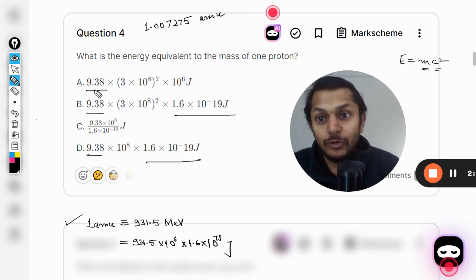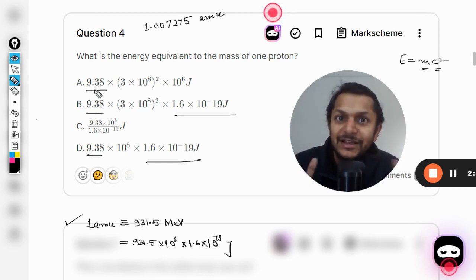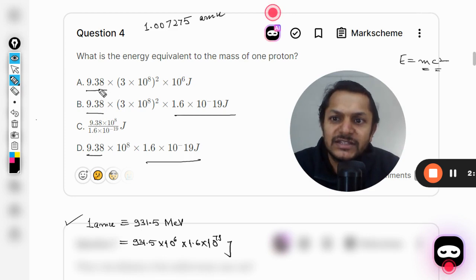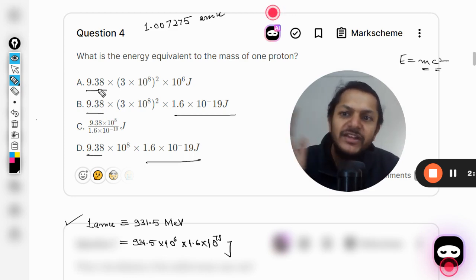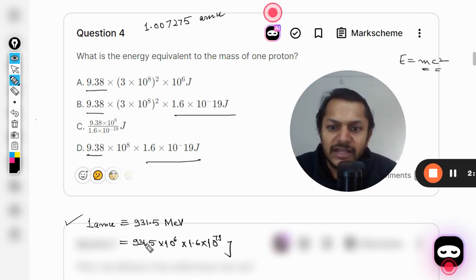Instead of having 931.5, you could be having 938. This is just the variation of the decimal that we can move. If you move this decimal here, it will come out to be 9.315.